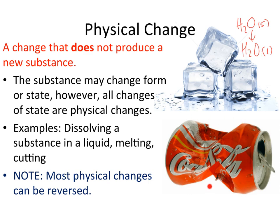Same thing with this aluminum can. We can crush the aluminum can, but it still remains an aluminum can with its plastic coating — the chemical composition doesn't change. We've just decreased the volume. So examples of physical change include dissolving substances, melting, cutting, boiling, etc.